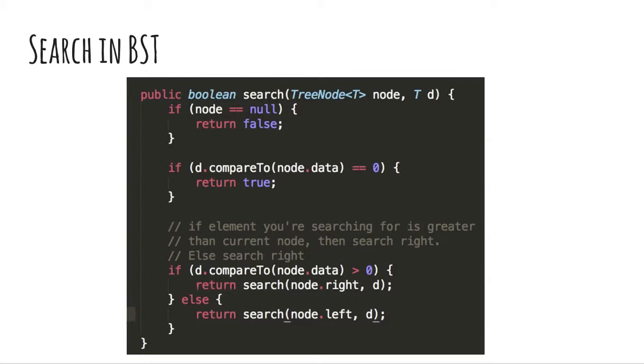Because of this, searching is not order n. Instead, it is order log n. This reduction in time complexity is the reason why binary search trees are efficient data structures compared to lists.